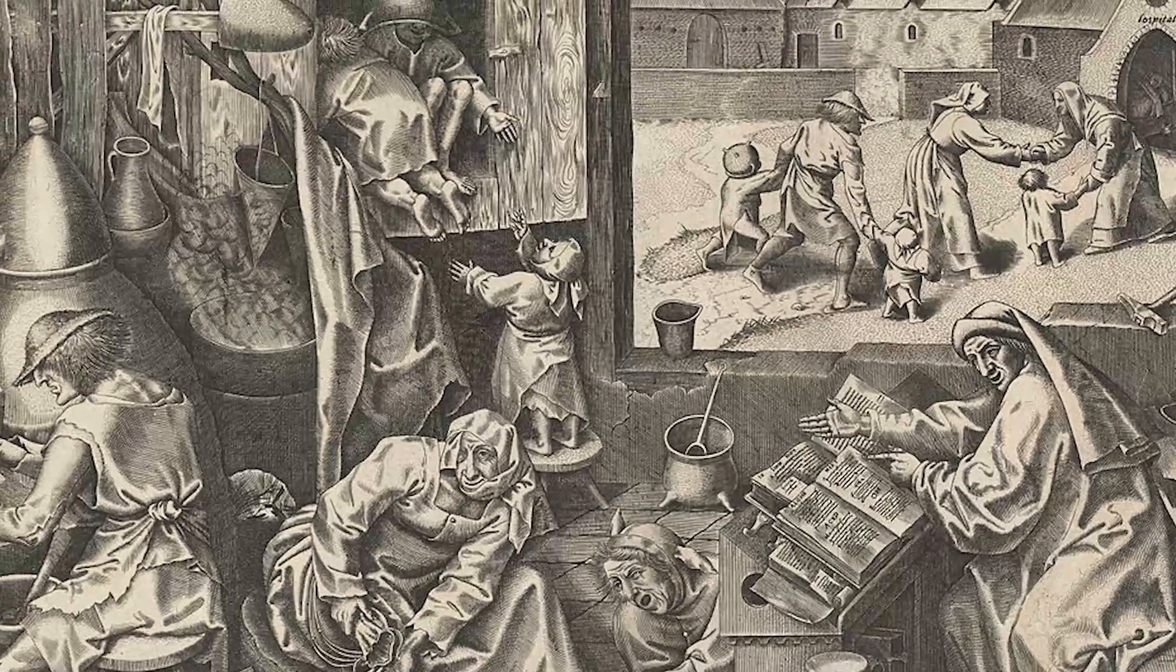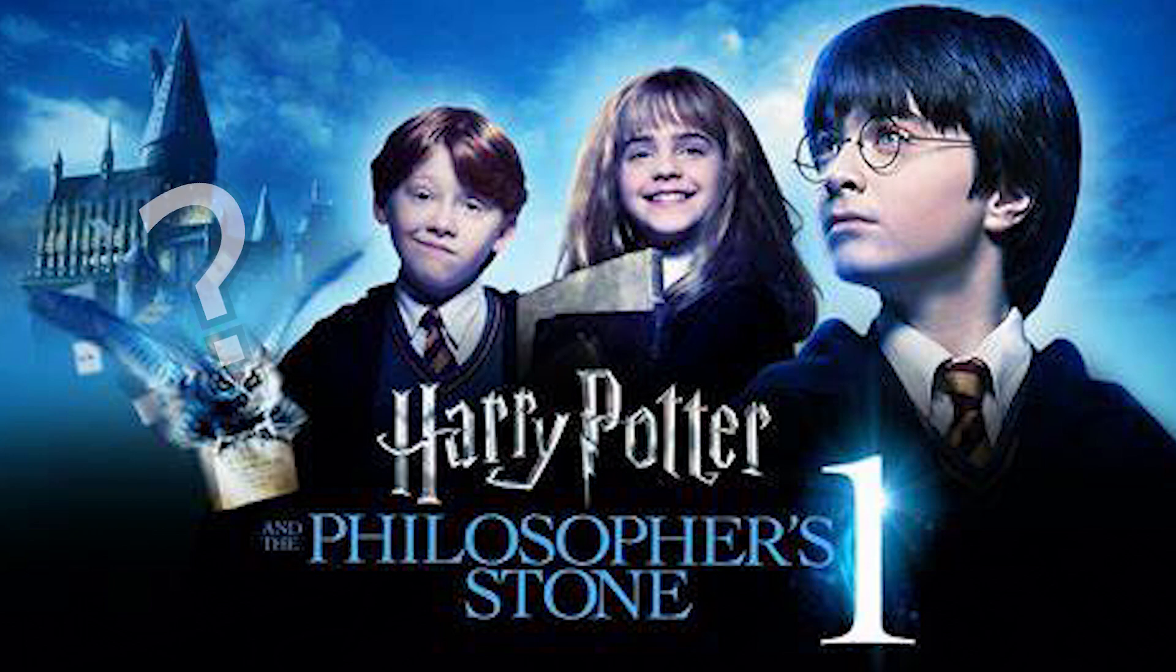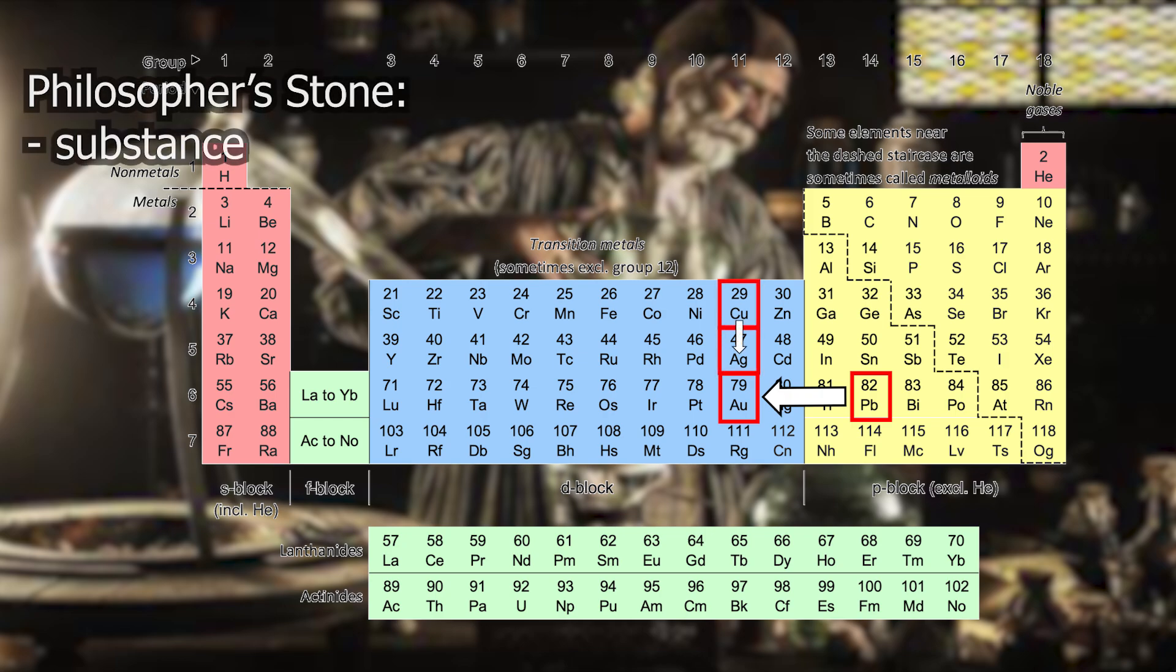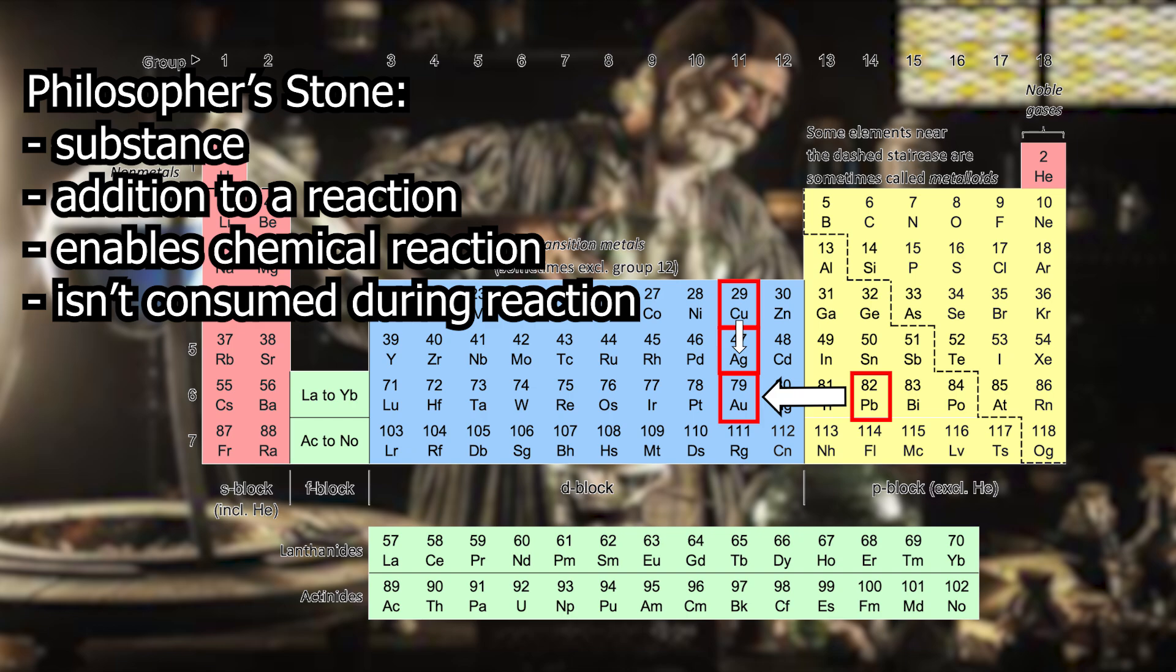Anyone who has ever heard of alchemistry may be familiar with the philosopher's stone. Is that even a stone? Where can you find it? Does it shine beautifully? First of all, what was the aim of alchemists? Not only to produce gold, but it was considered the highest discipline to make gold from lead, for example. And often they try to produce silver from copper. The philosopher's stone was supposed to serve as a substance that made this transformation possible as part of a chemical reaction without being consumed in the process. That sounds a bit like a catalyst to me.